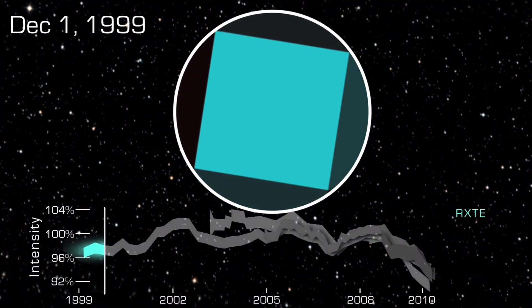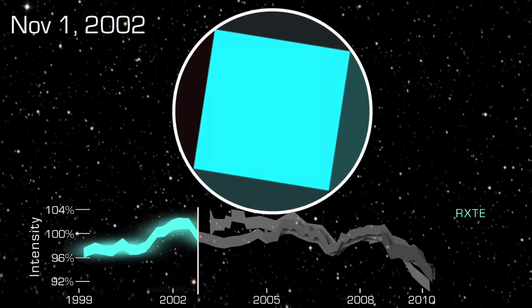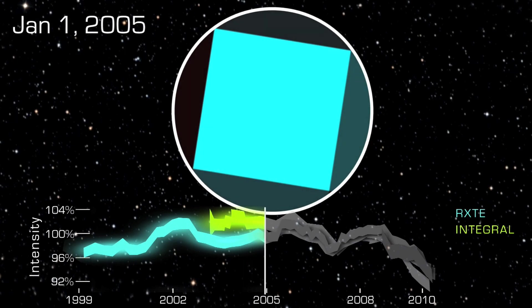From 1999 to 2008, it brightened and faded by as much as 3.5% a year. And since 2008, it's faded by 7%.